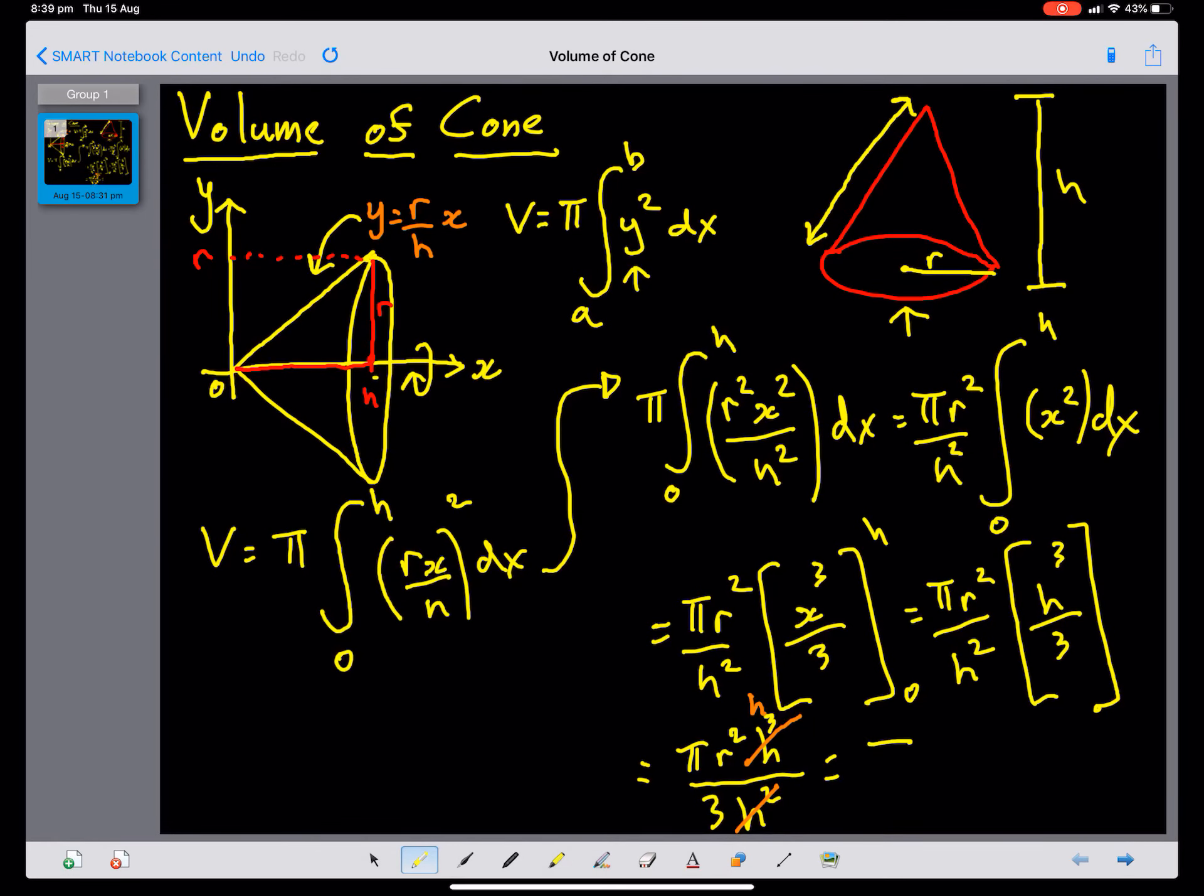Now we have pi, R squared, h, all over 3.